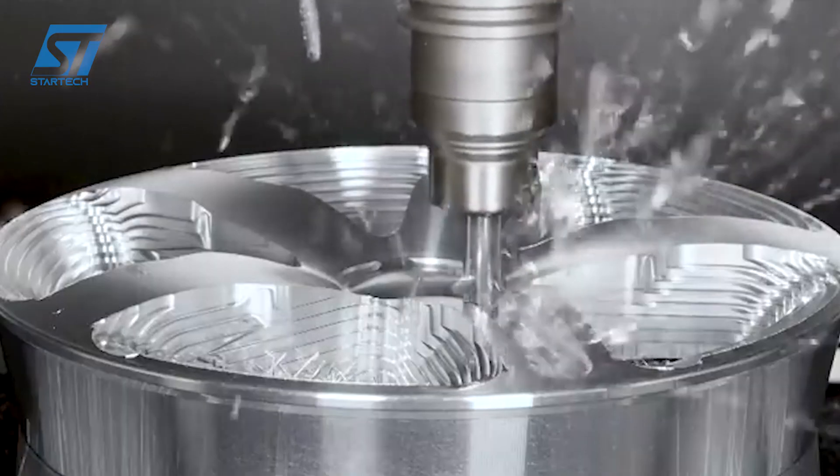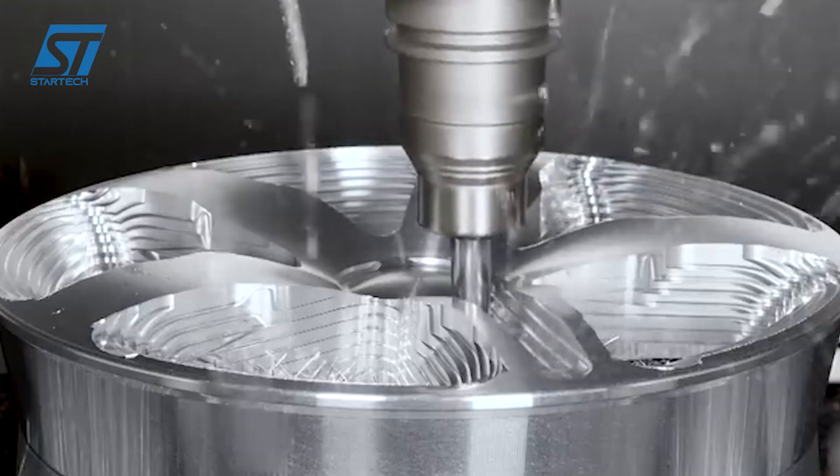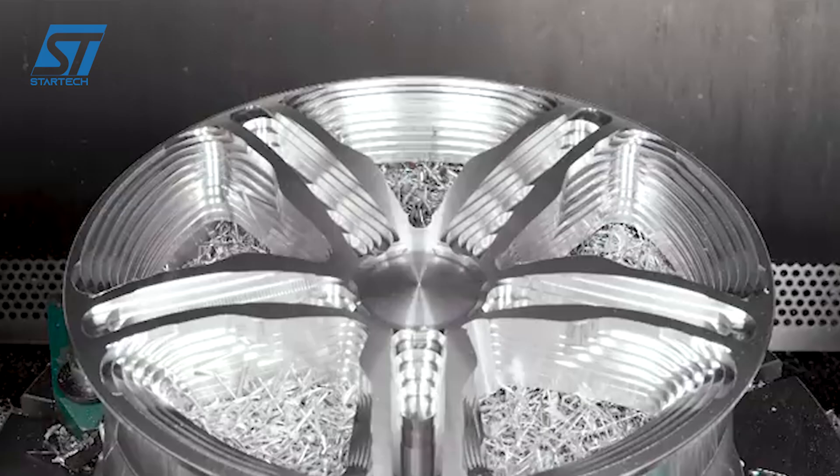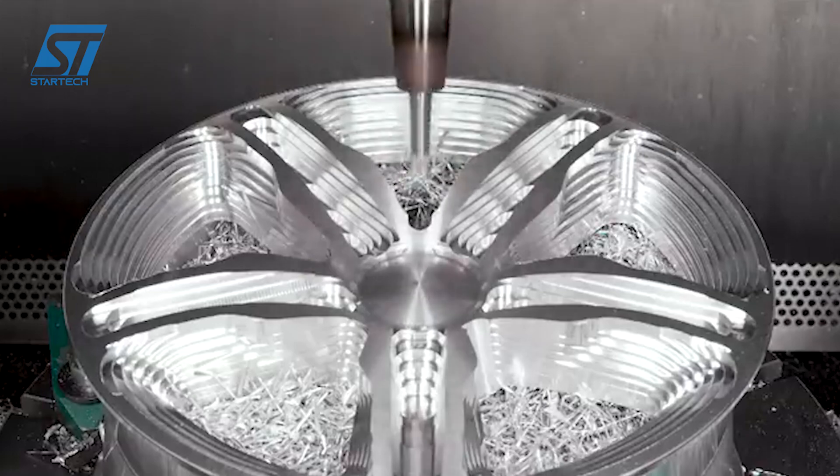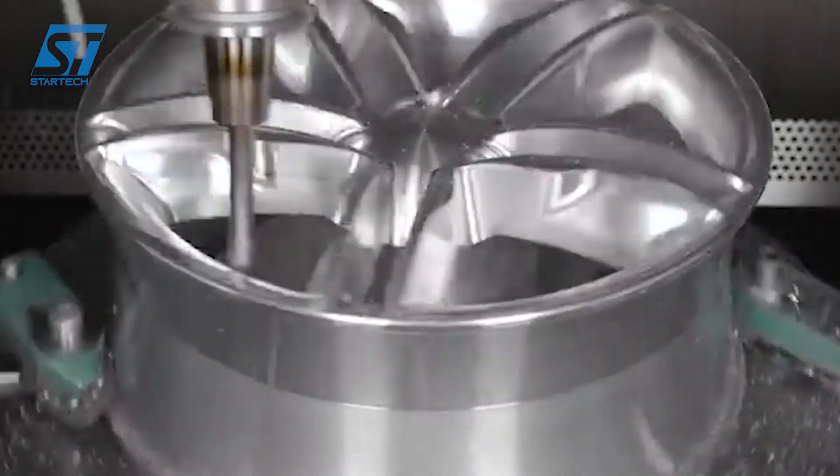For rims with complex flowing designs, 5-axis milling is essential. It allows the cutting tool to move in 5 axes simultaneously, enabling the creation of areas that would be impossible to reach with 3-axis machining.